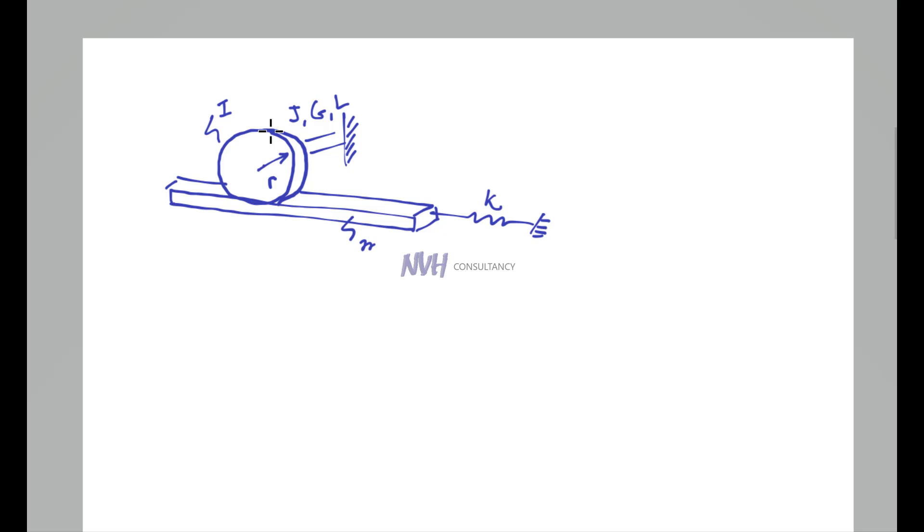The mass of this sliding bar is M and X is the translational motion. So what we want to find is the equivalent mass and equivalent stiffness of this system.